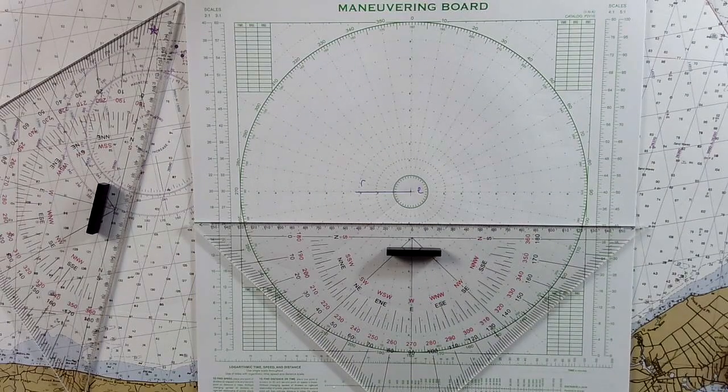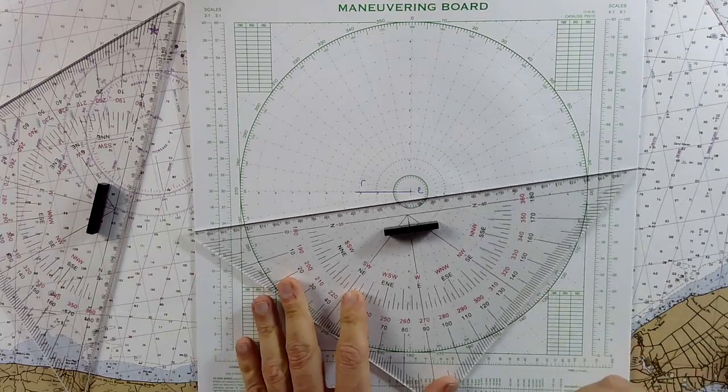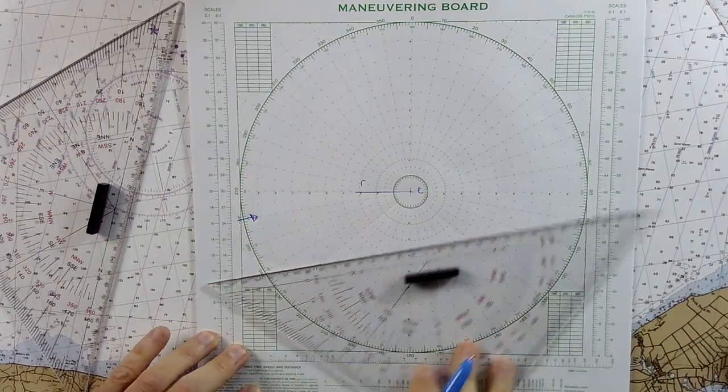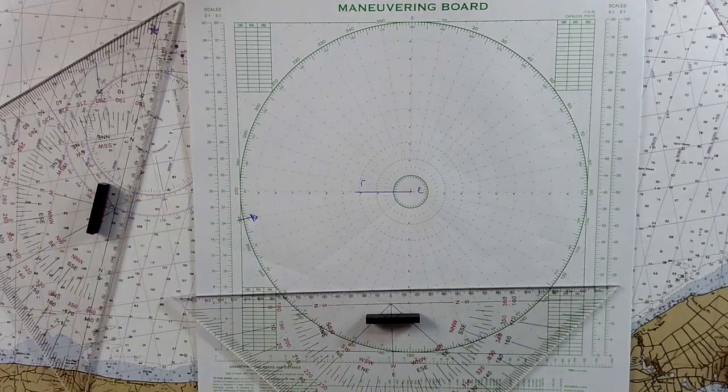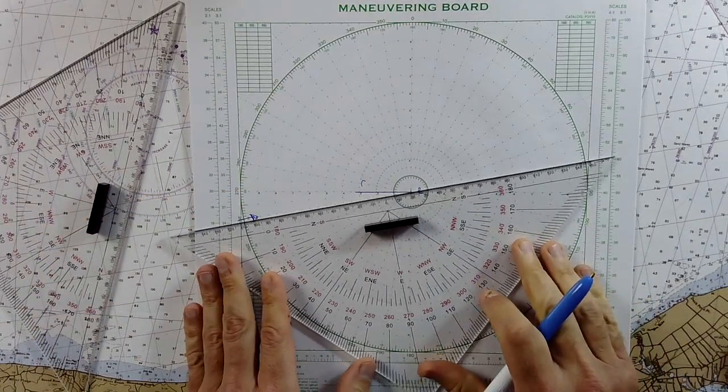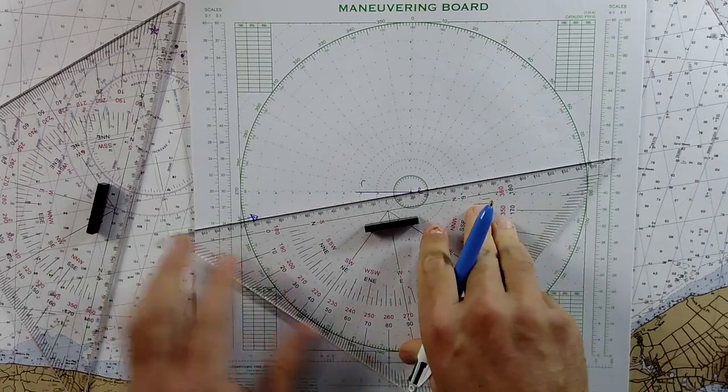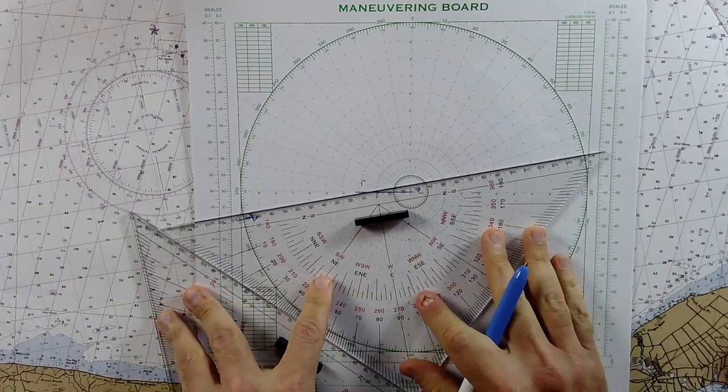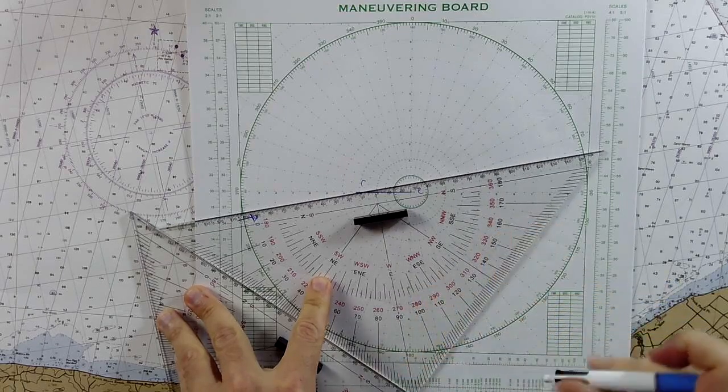The apparent wind is 10 degrees off the port bow, so that means it's going to be coming from here, 10 degrees off the port bow, at a speed of 30 knots. So if we take this angle right here, 10 degrees off the bow, and parallel it over to R, and then draw it out,